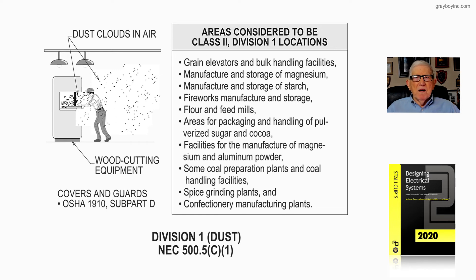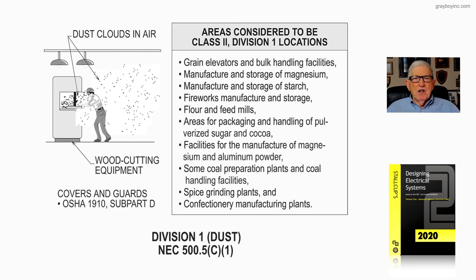These are some of the basic rules, and we'll be getting into all of this in more depth through Chapter 21 of Stockup's Designing Electrical Systems book, Volume 2. That's what Figure 21-3 is illustrating — when the dust is there all the time, either in layers or clouds, you have to be cautious and determine when it's in a state that could be in an explosive range. That's what Figure 21-3 is illustrating to the user of the NEC.